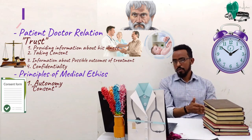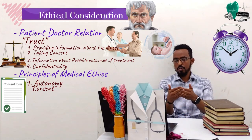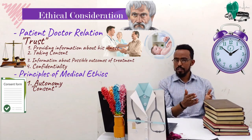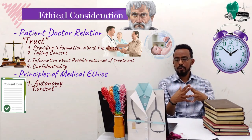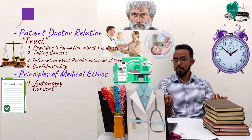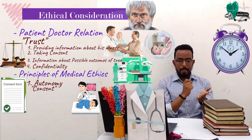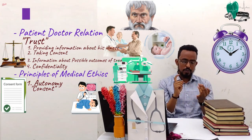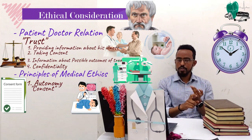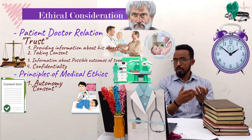Consent can be verbal or written. For history-taking, physical examination, or simple procedures, we may take verbal consent. But for serious procedures involving complicated surgeries or procedures like colonoscopy, we need informed written consent. The patient should be informed about the possible treatment options, the intervention, the complications of the treatment, the complications of the anesthesia, and the possible outcomes.